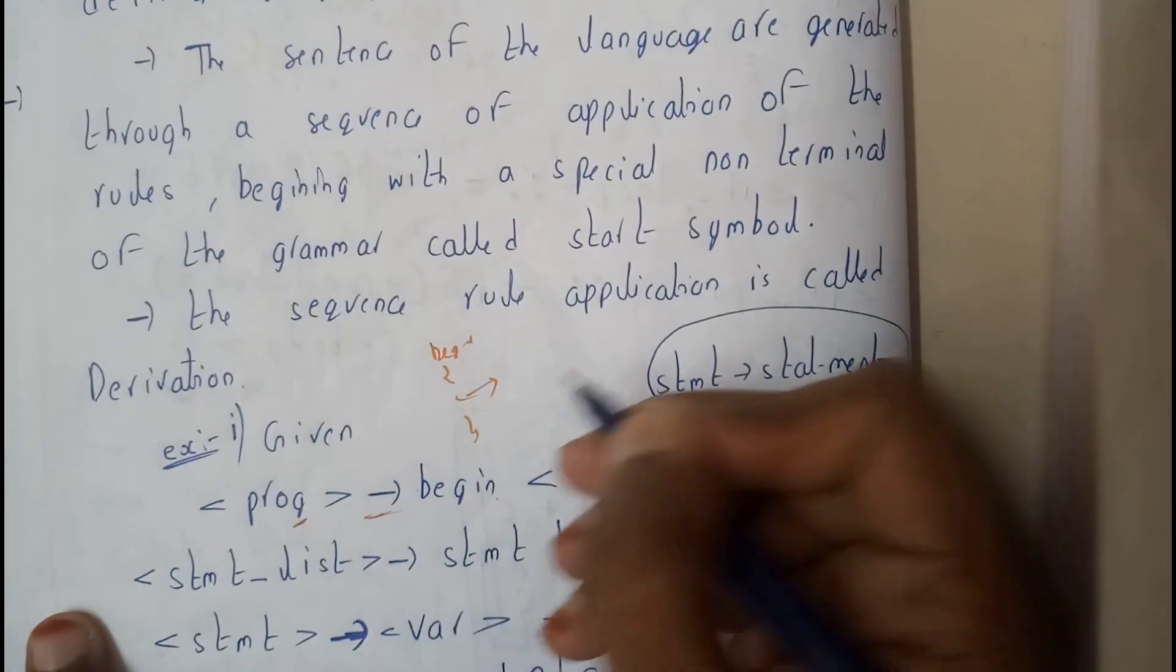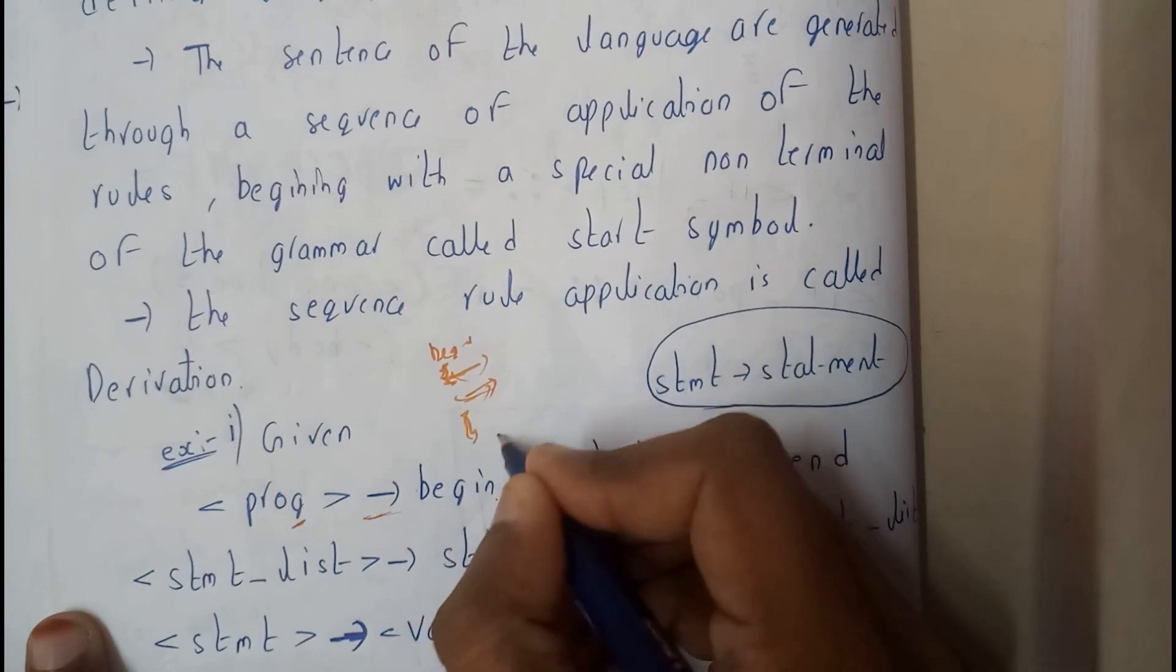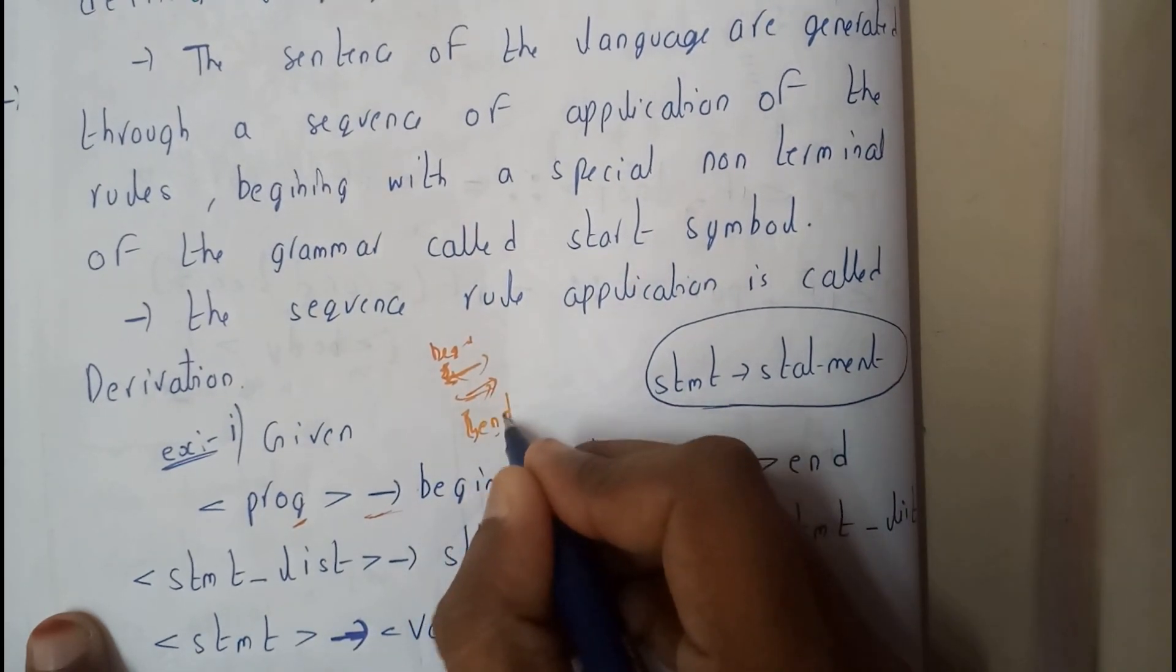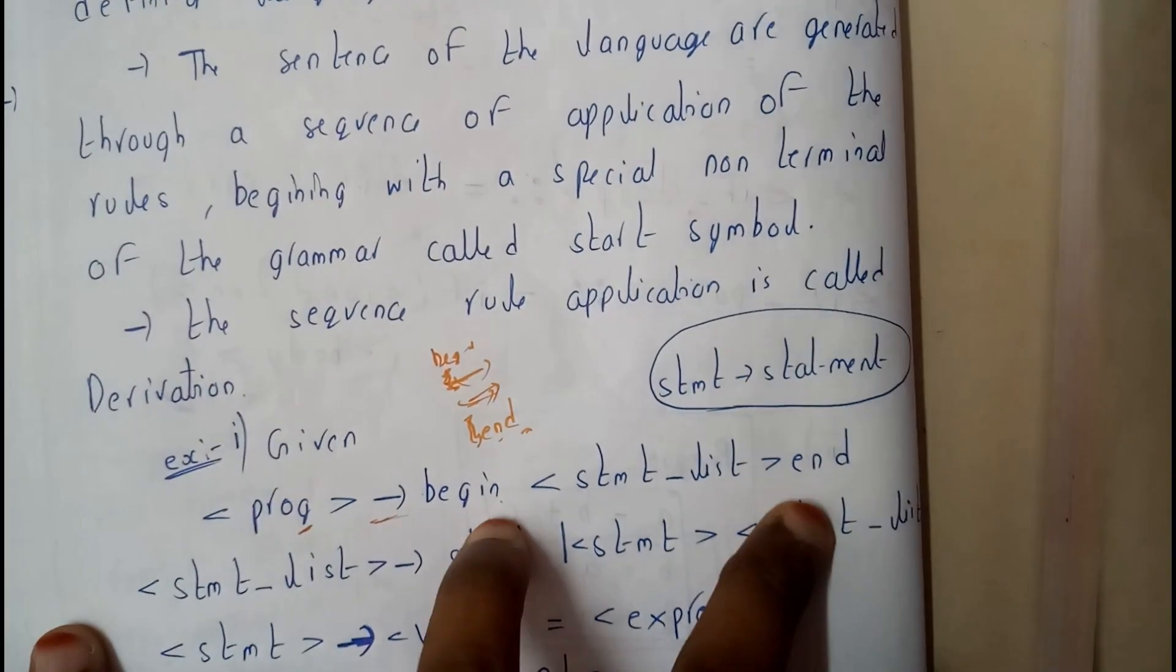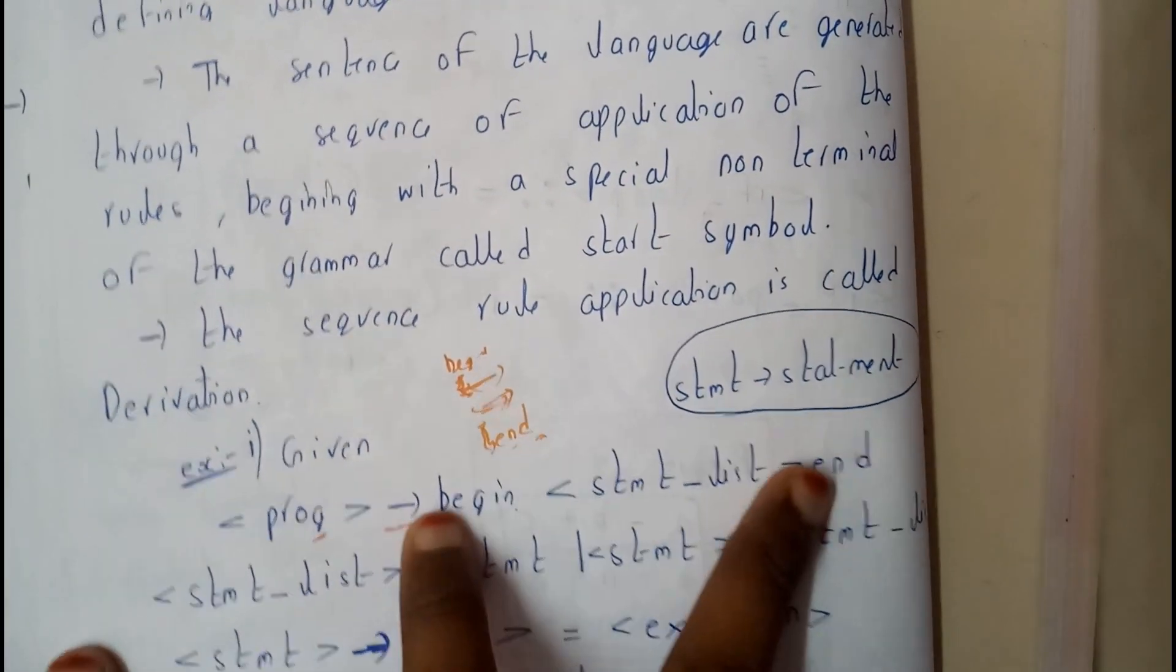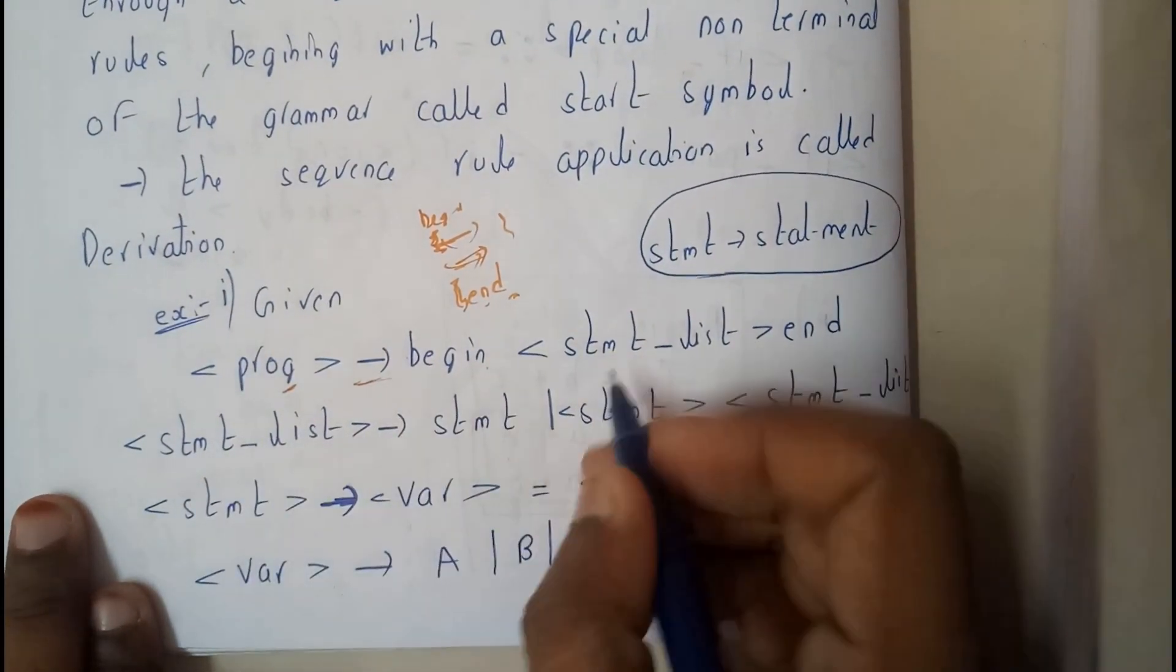At the end I wrote 'end', so this is the beginning and end, showing these are the starting and ending points of the program. In between them there are some statement lists.